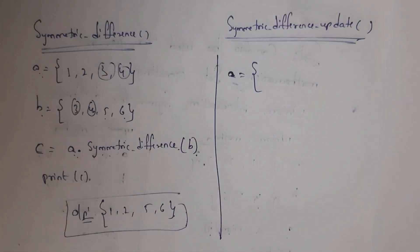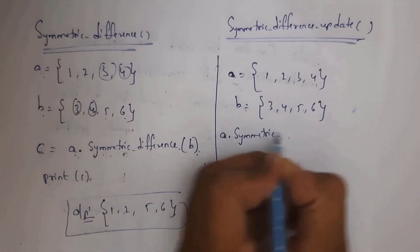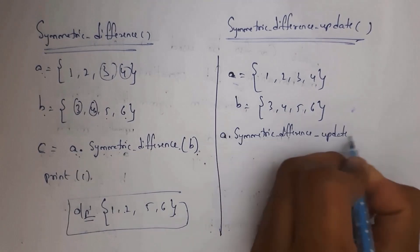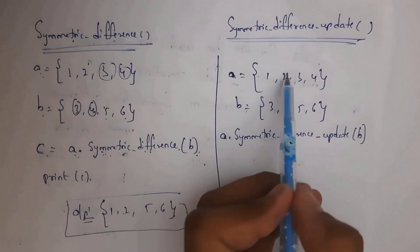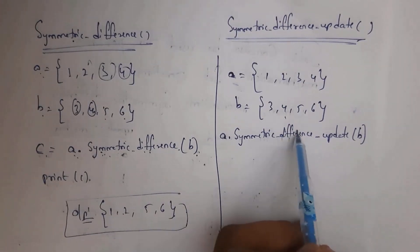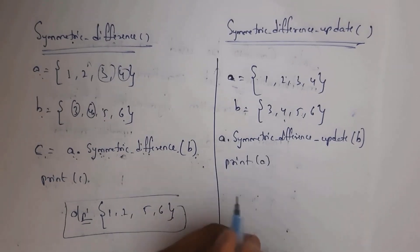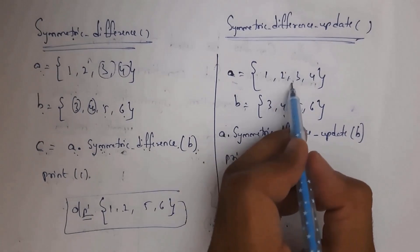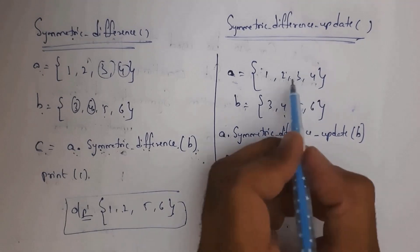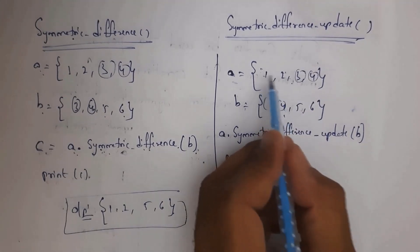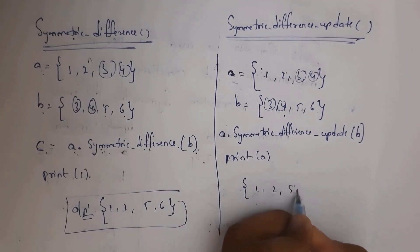Next I will explain the symmetric_difference_update method. Same example. I written a.symmetric_difference_update(b). This performs symmetric difference between two sets and stores the result in variable a itself. In the sets {1, 2, 3, 4} and {3, 4, 5, 6}, items 3 and 4 are similar, while 1, 2, 5, 6 are non-similar. So whenever you write print(a), you will get output 1, 2, 5, 6.